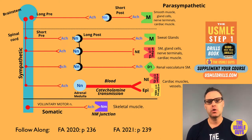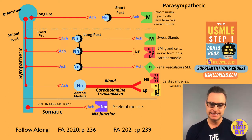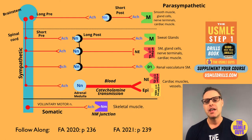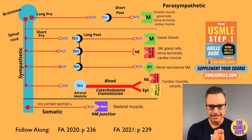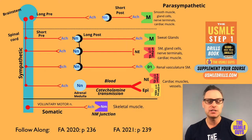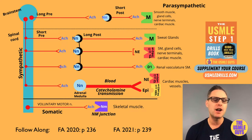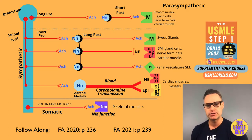Looking at our acetylcholine receptors: the nicotinic receptors, characterized by NN, are ligand-gated sodium-potassium channels. The NN receptors are found in autonomic ganglia and in the adrenal medulla, while the NM — the muscarinic receptors — are found at the neuromuscular junction of the skeletal muscle.